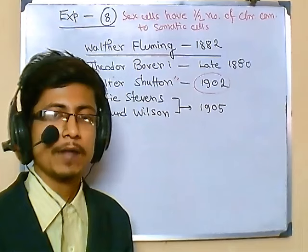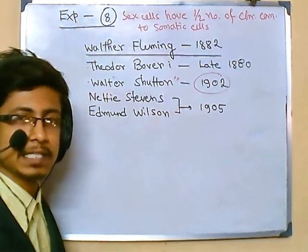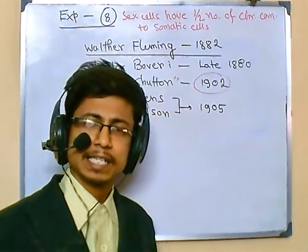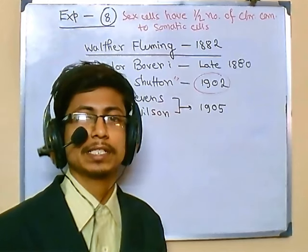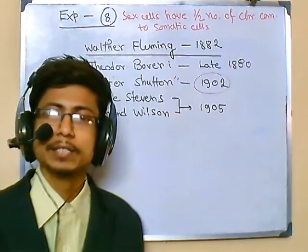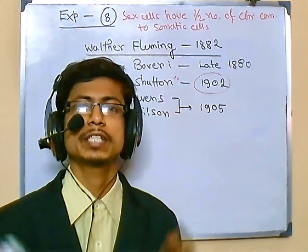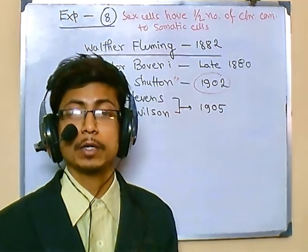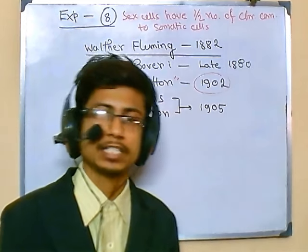After meiosis, from the experiments by Theodor Boveri and Walter Sutton in the late 1880s and 1900s, we find that sex cells like sperm and egg contain chromosomes, but the number of chromosomes in sex cells is half that of somatic cells. This is important because if chromosome numbers kept increasing in sex cells, it would cause problems — abnormal chromosome numbers can lead to cell death.